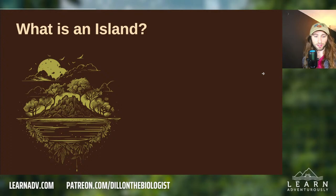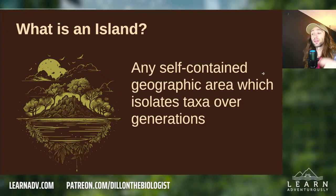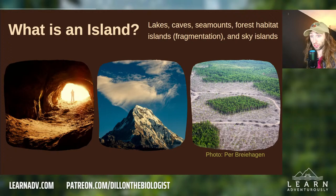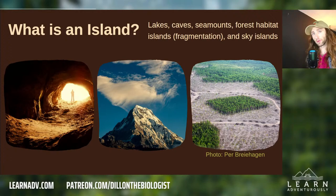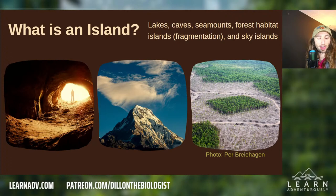First, we need to get some definitions down. What is an island? We're going to define an island as any self-contained geographic area which isolates taxa over generations. This includes not just marine islands but also lakes, caves, seamounts, and fragmented forest habitat. So when we're talking about island theory, an island is any self-contained geographic area which isolates taxa over generations — though we'll largely focus on marine islands.